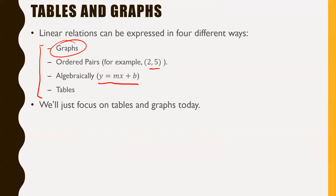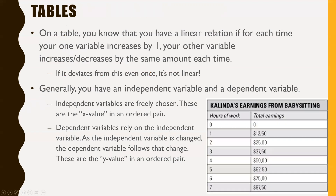Really, the only ones we care about today are graphs and tables — both of those things are really connected. Starting with tables: on a table, you know that you have a linear relation if, for each time your variable increases by one, your other variable increases or decreases by the same amount each time — kind of like that bag of chips example.